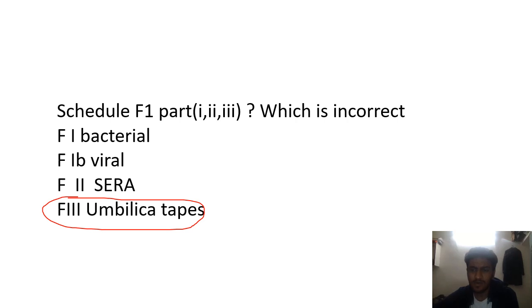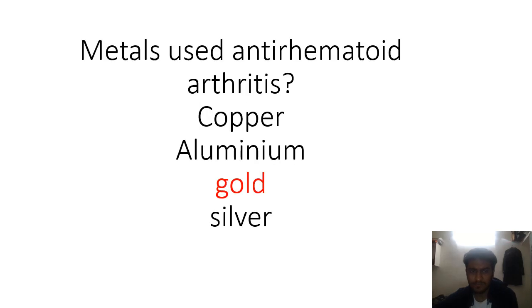From F1, which one is incorrect was asked. Obviously F3 is for surgical dressings. Umbilical tapes probably could be the wrong answer because umbilical tapes is not a part of F1. F2 is correct - like F1 is for bacterial, F1B is for viral. So it could be umbilical tapes, option D.